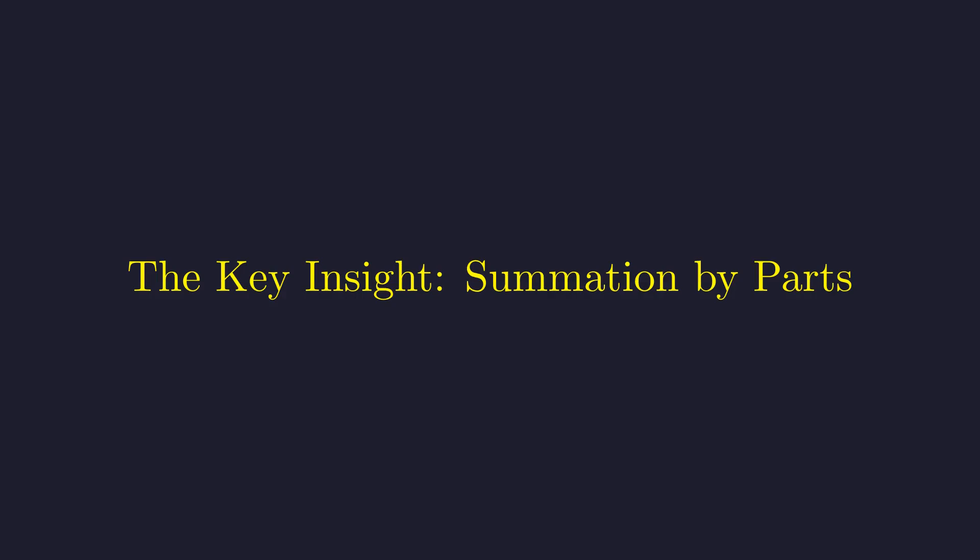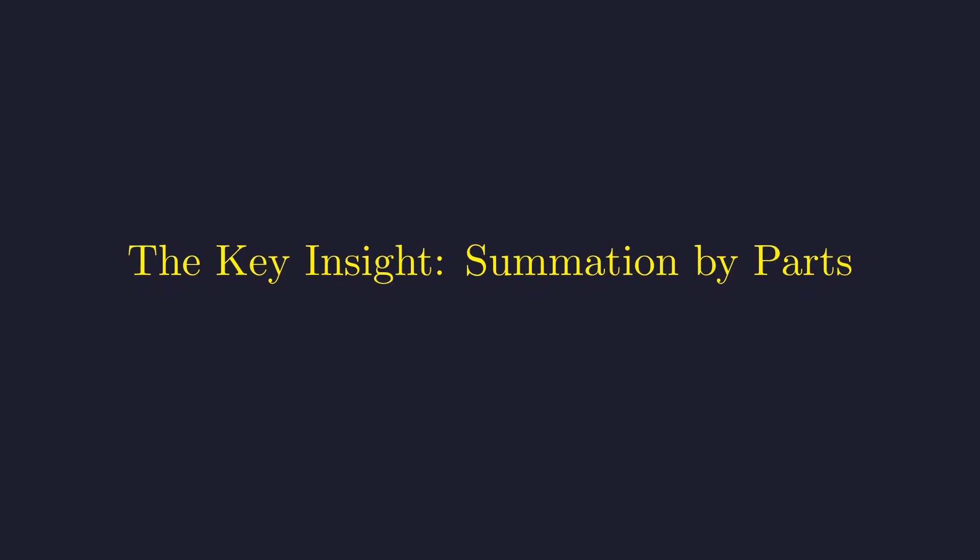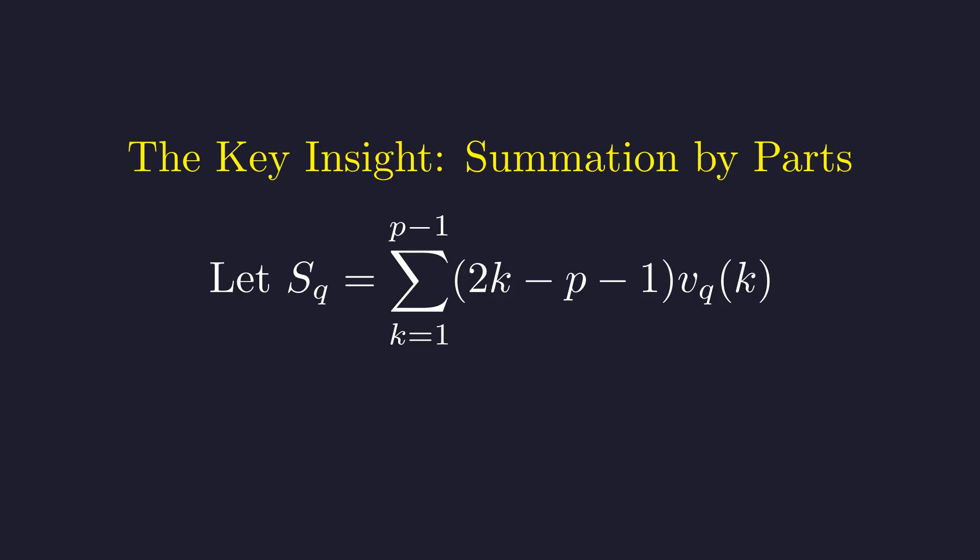Staring at this sum, you might feel a bit stuck—it's not obvious how to evaluate it directly. But here's where we can pull out a classic trick from the calculus playbook: except instead of integration by parts, we'll use summation by parts. It's the discrete analog, and it's about to transform this seemingly intractable sum into something much more manageable.